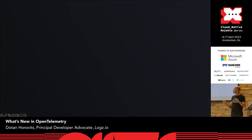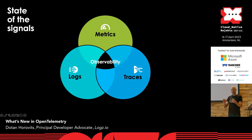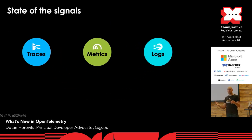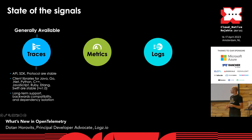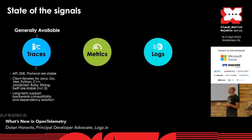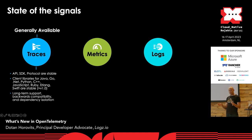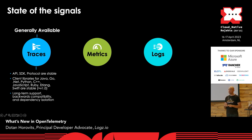Now let's talk about updates starting with the main signals — logs, metrics, and traces. The most mature signal is traces, which is already generally available and stable in CNCF terminology, meaning the API, SDK, protocol, and collector are all stable. Many client libraries are at version 1.0 or above — Java, Go, .NET, Python, and more. Stable means it comes with guarantees for long-term support, backwards compatibility, and dependency isolation — everything you need to run this in production environments.